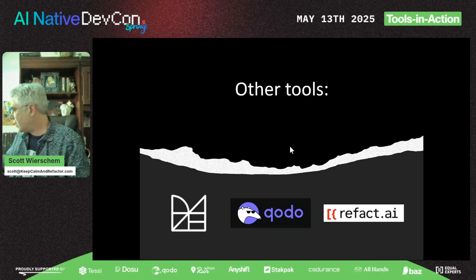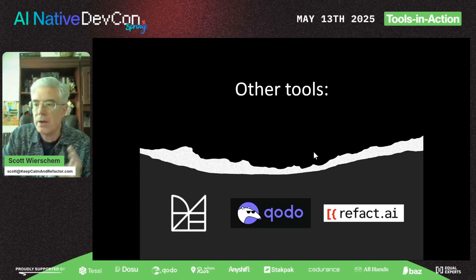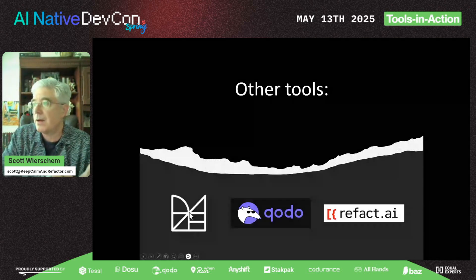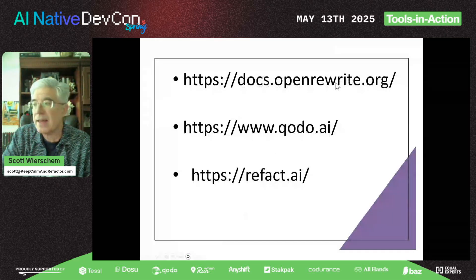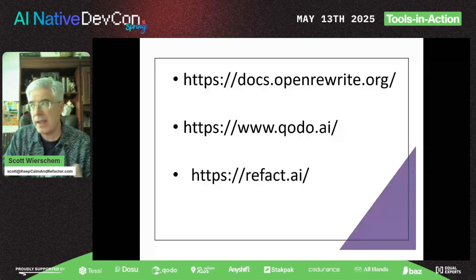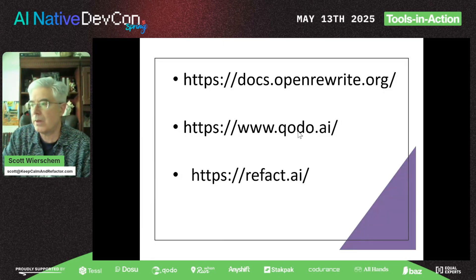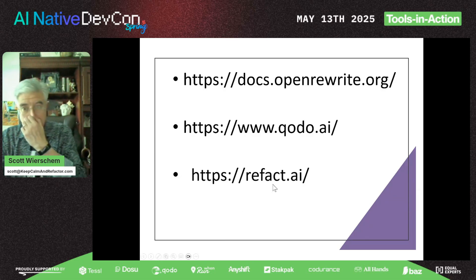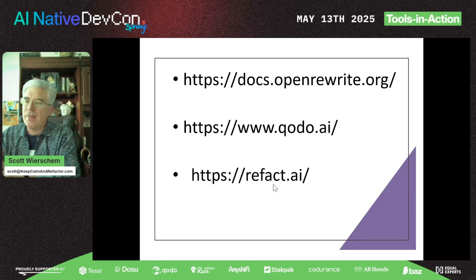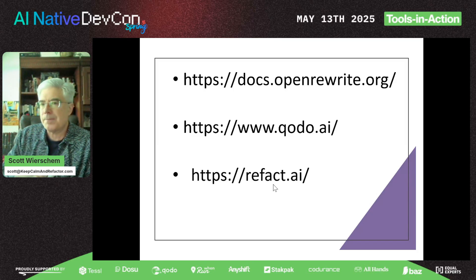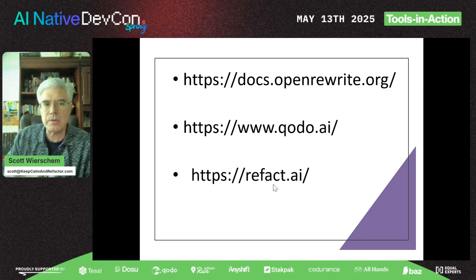There are other tools worth knowing. There's OpenRewrite, and I'd strongly recommend getting into that. There's also Kodo, which is a plugin for IntelliJ and VS Code — a really handy tool that does cool stuff. And there's another one called refact.ai. I like that all of them have a free version, because 15-20 dollars a month per tool starts to add up.